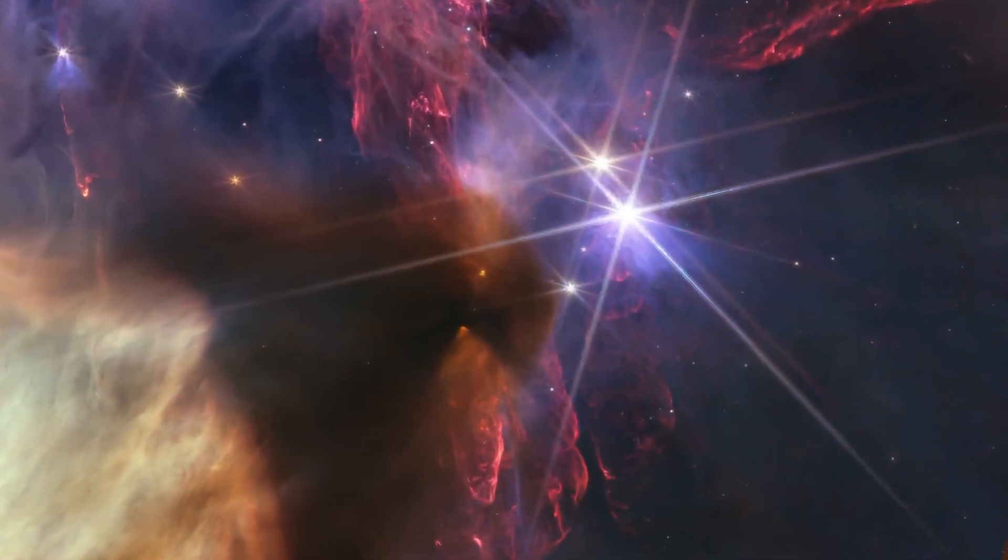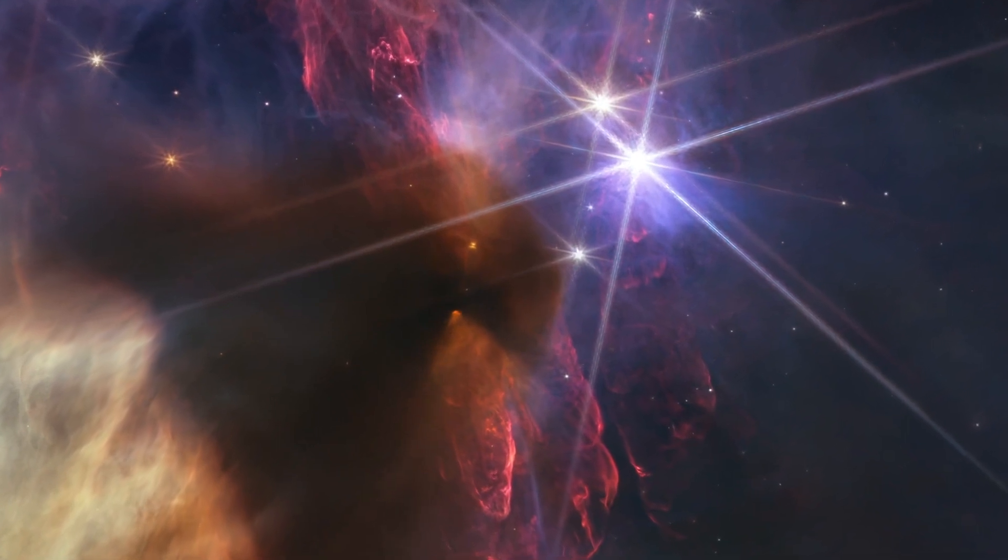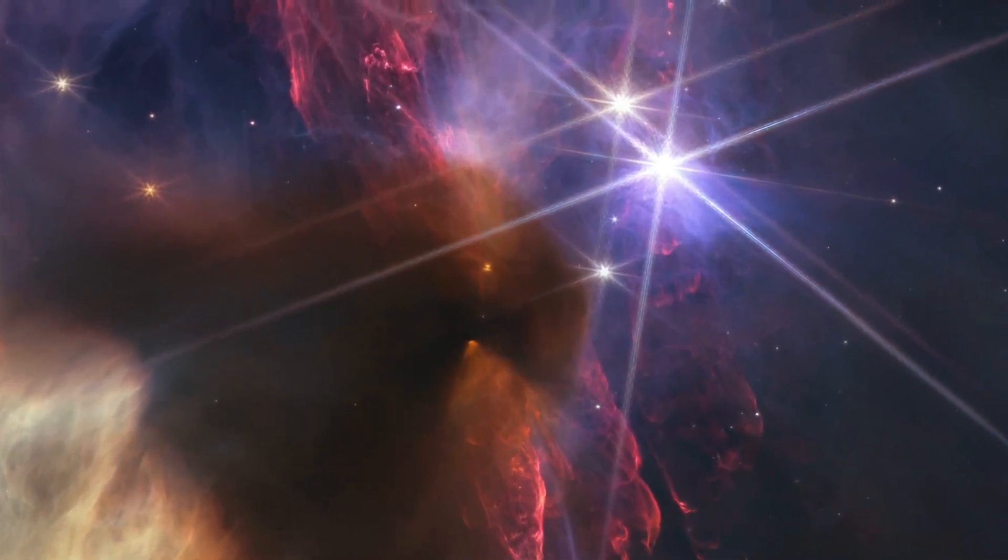The striking large red vertical band is a protostellar outflow, twin powerful jets of material that occur during the early stages of star formation.